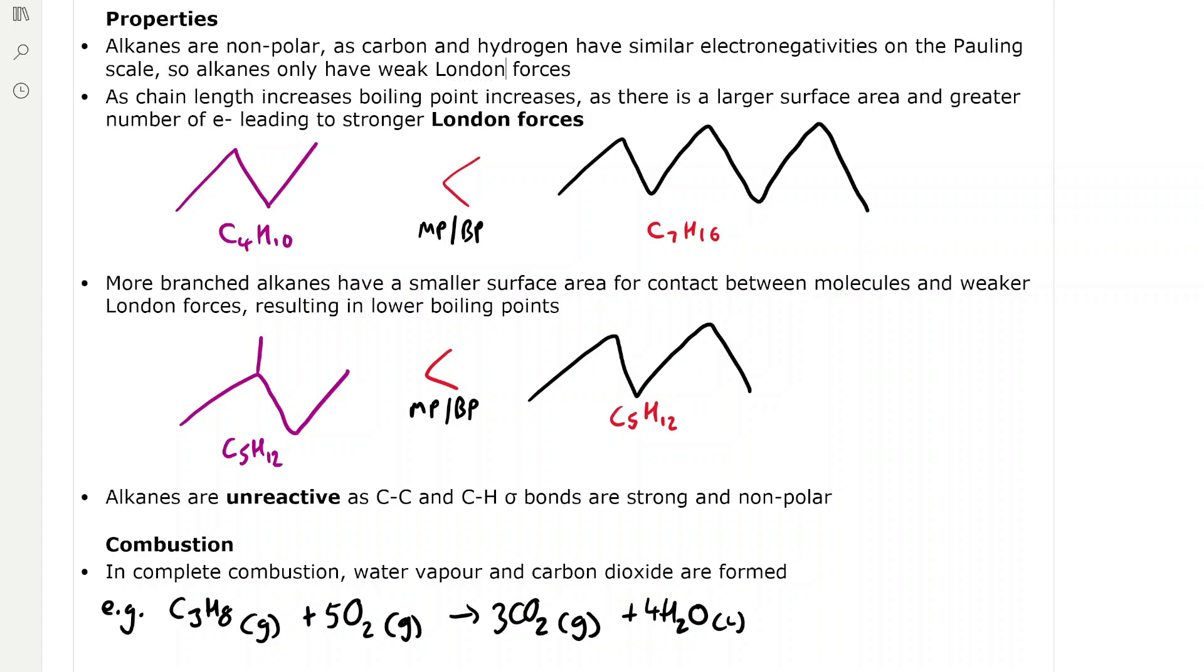For example, butane has a chain length of only four carbon atoms whereas heptane has seven carbon atoms, so heptane has stronger London forces which require more energy to overcome, giving it a higher melting and boiling point than butane.